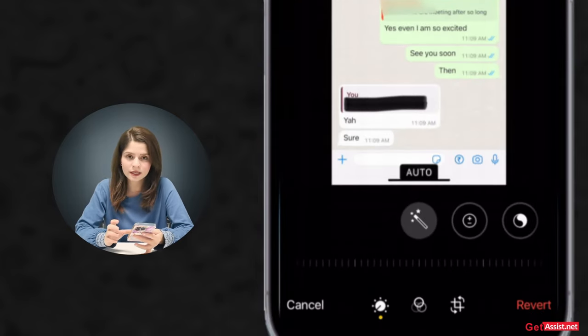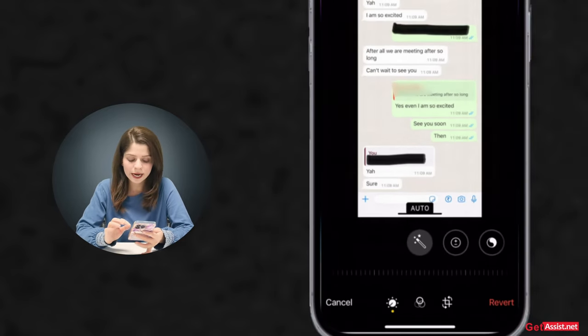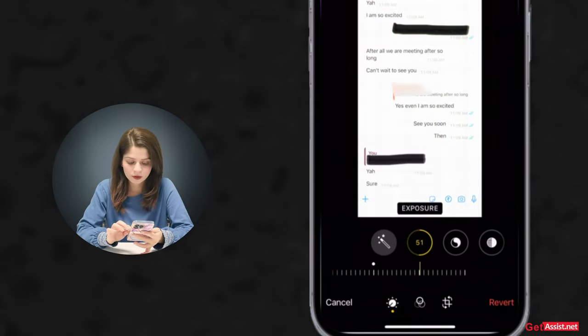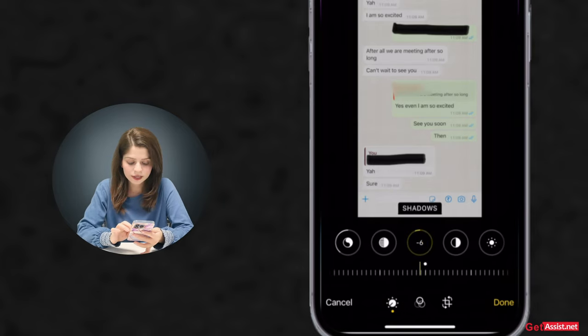Here you will get a few settings using which you can make this text readable. What you need to do is just adjust certain settings like exposure, brilliance, and you can also reduce or increase the shadow and contrast. You have to decrease it.